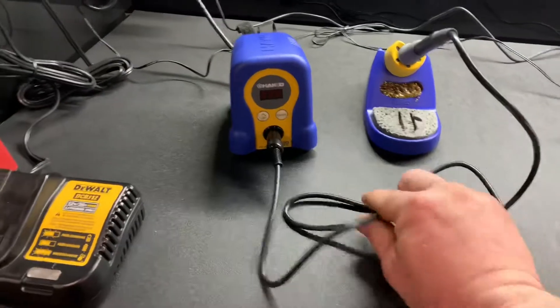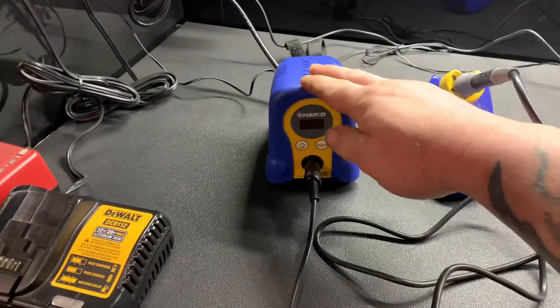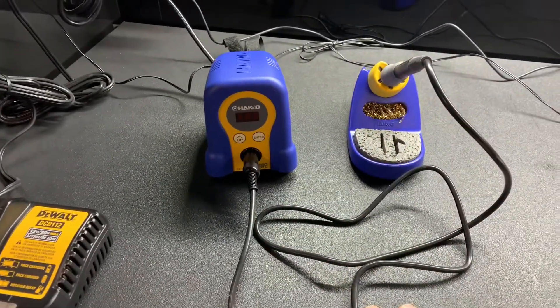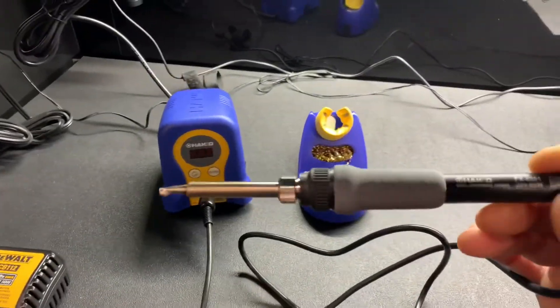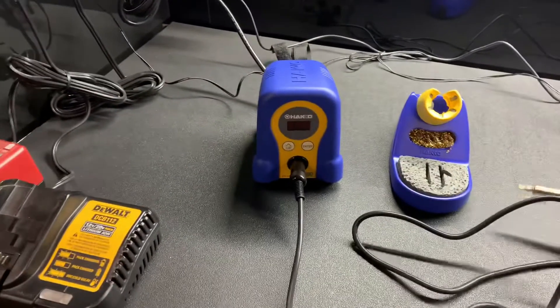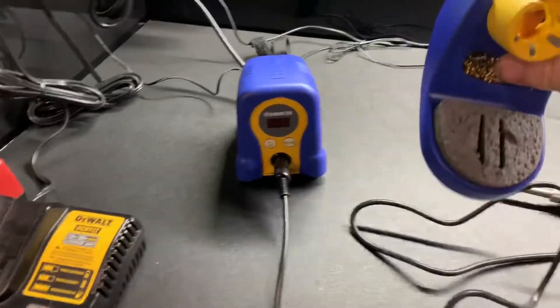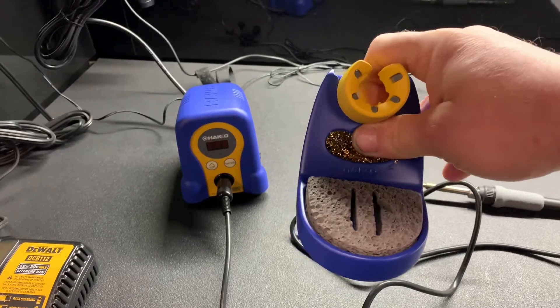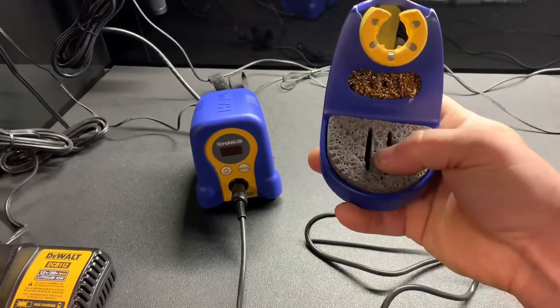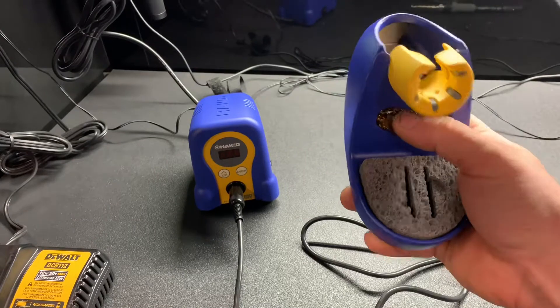For the $99 this is what you get. You get your power supply, your cord, your soldering pin, you get the station to put your pin in, it comes with the sponge, the cleaner.